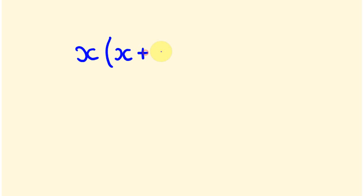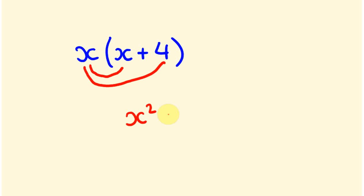Now let's go to a harder example. What about if we had x on the outside of the brackets — x(x+4) — and we wanted to expand these? It's the same sort of process. x times x is x squared, and x times positive 4 is positive 4x.